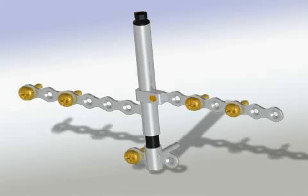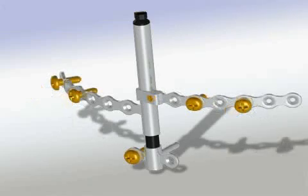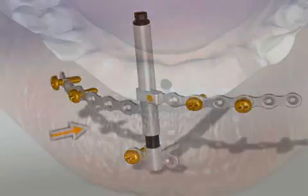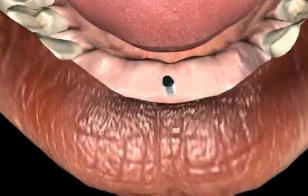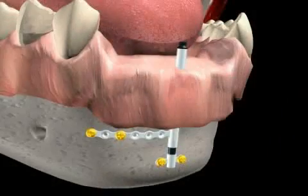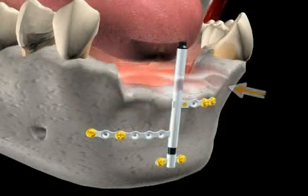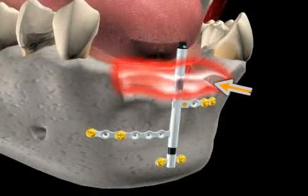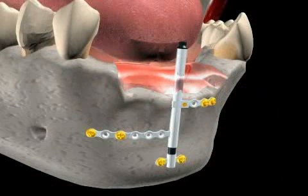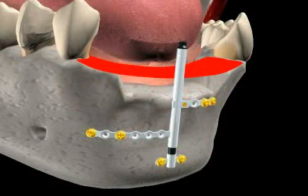A distractor is a surgical instrument or apparatus used for bone development. In this picture you can see a distractor. The distractor is attached to the lower jaw. You can clearly see the bone defect in this area, where the alveolar ridge lies below the neighboring teeth.